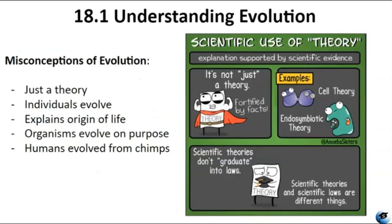When Darwin first introduced the theory of evolution, it stirred up some controversy. However, within 20 years of publishing his book On the Origin of Species, most biologists, especially the younger ones, embraced the theory. Despite its wide acceptance, misconceptions about how evolution works still persist. One misunderstanding is dismissing evolution as just a theory. In science, a theory is a well-tested explanation based on evidence. Evolution is supported by solid evidence, like gravity and atomic theories.